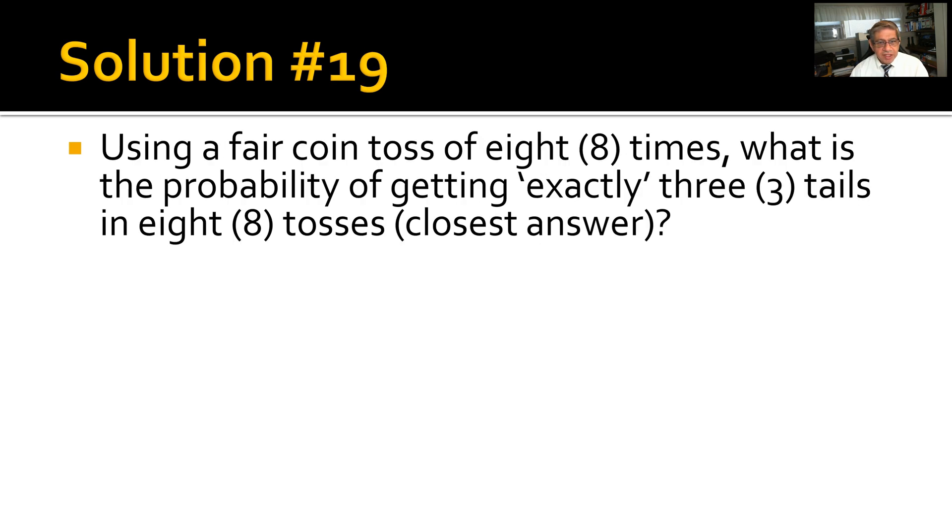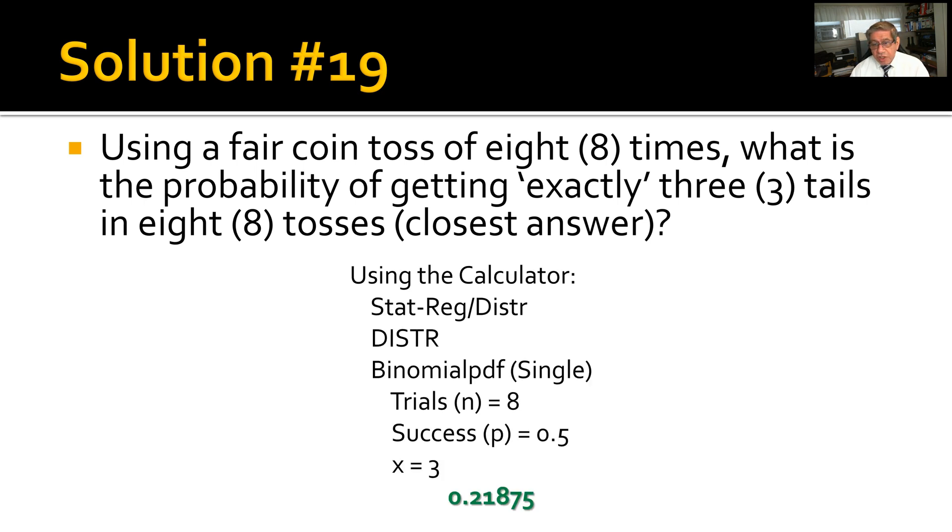Solution number 19: Using a fair coin toss of eight times, what is the probability of getting exactly three tails amongst those eight tosses? Use the calculator with statistical functions. The particular function is distribution—it's a binomial distribution called binomial pdf or single binomial pdf. Type in these values: trials n of 8, success factor p of 0.5, and x = 3. The calculator comes up with 0.21875, which is choice C, rounded amongst the choices given.